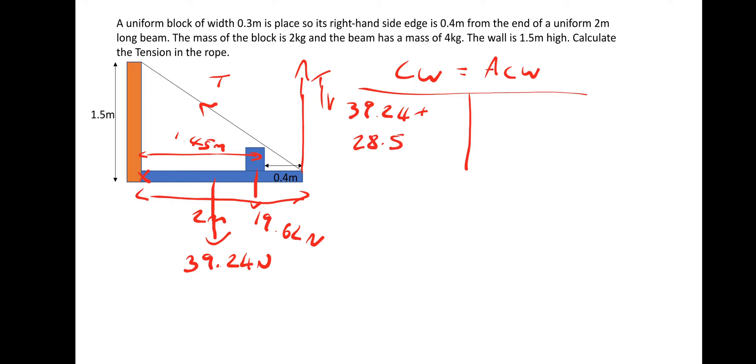So we've got the 28.5 there going clockwise. So that's clockwise finished. Now we've got equal to the anti-clockwise moment. Which is the vertical tension. So tension vertical. Multiplied by the distance which is 2 meters. So to get the vertical tension we need to do 39.24 plus 28.5 divided by 2. So that gives a vertical tension of 33.9 newtons.